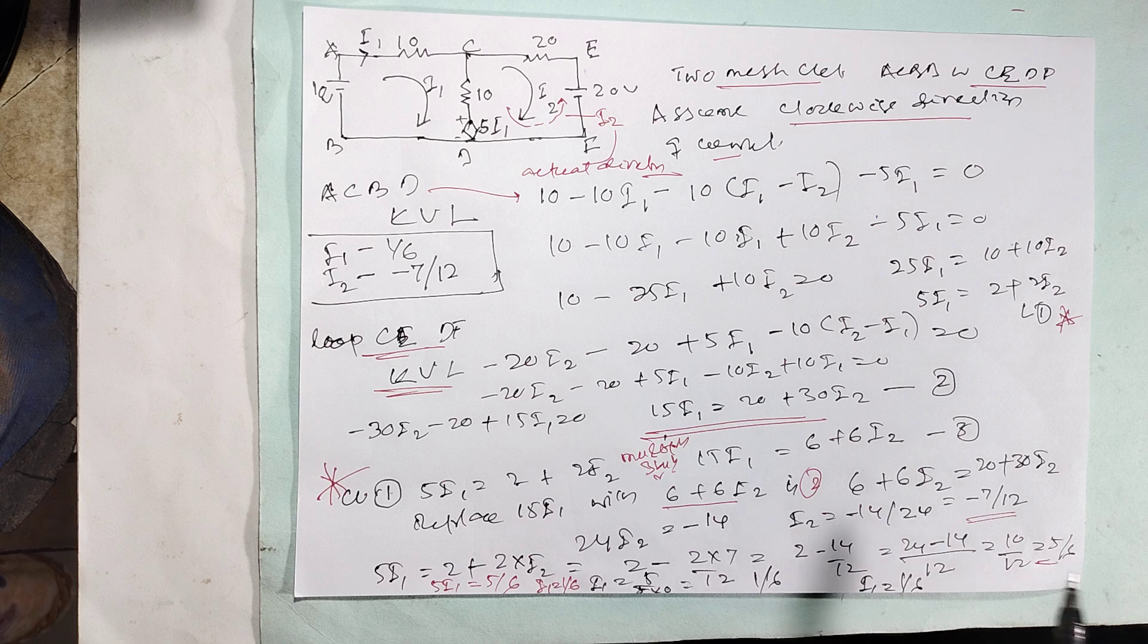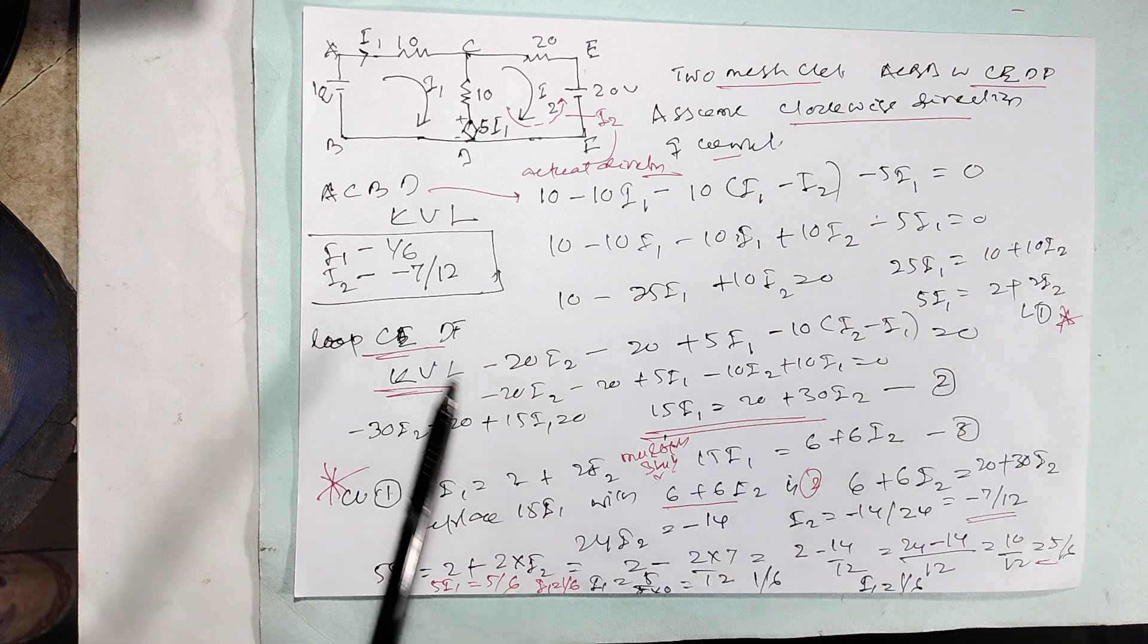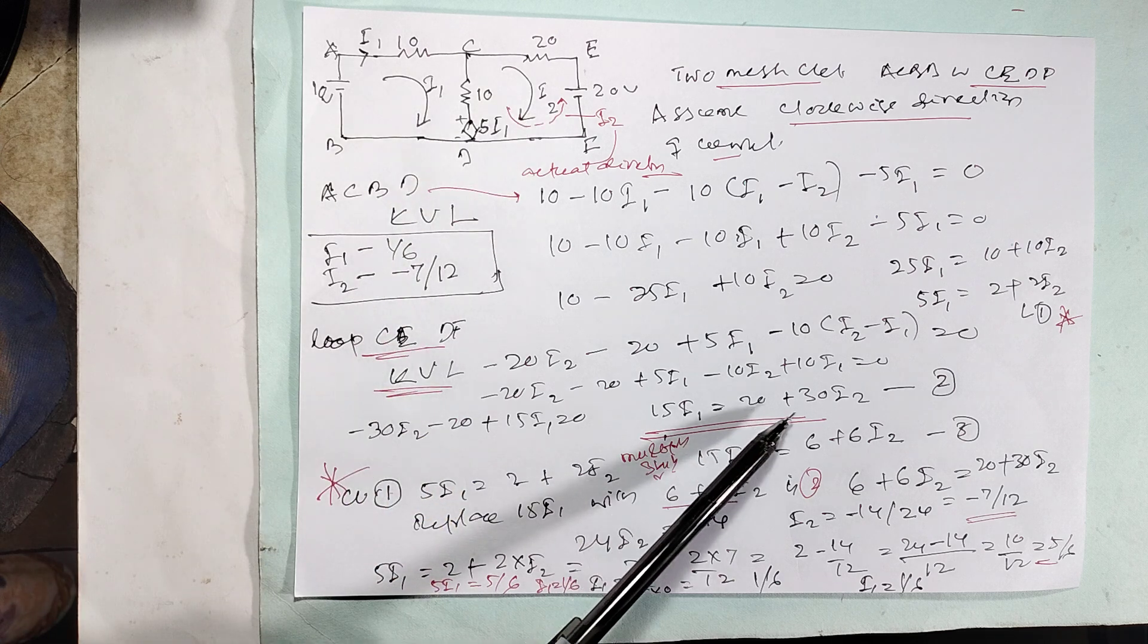Then first in this case, it is coming 5I1 equals 2 plus 2I2. In second case, it is coming 15I1 equals 20 plus 30I2.